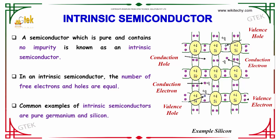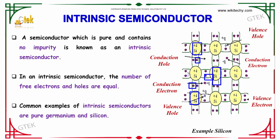This silicon will have 4 electrons — 1, 2, 3, and 4 — and the remaining electrons are associated with neighboring silicon atoms through covalent bonds. This is how each silicon atom is bonded with the surrounding silicon atoms.